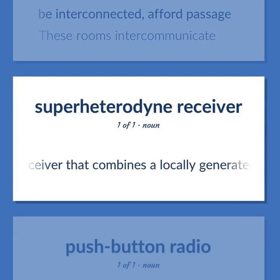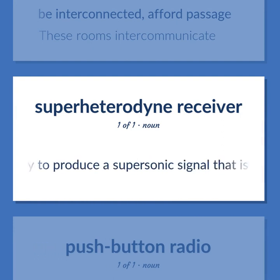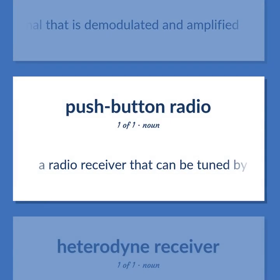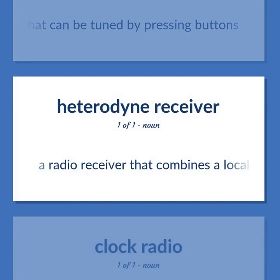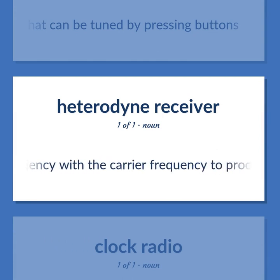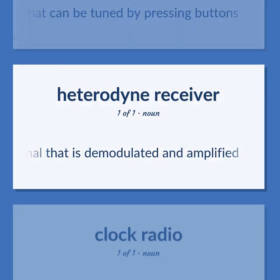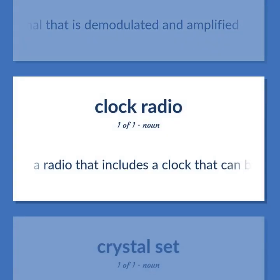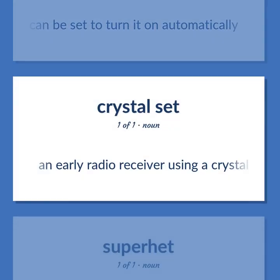A radio receiver that combines a locally generated frequency with the carrier frequency to produce a supersonic signal that is demodulated and amplified. A radio that includes a clock that can be set to turn it on automatically. An early radio receiver using a crystal detector.